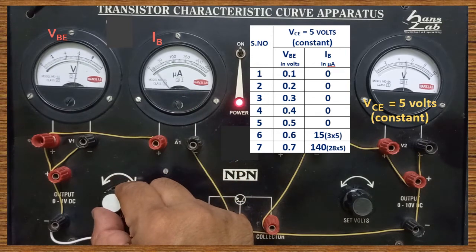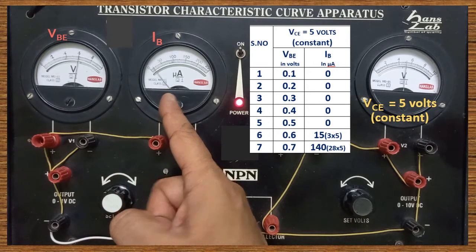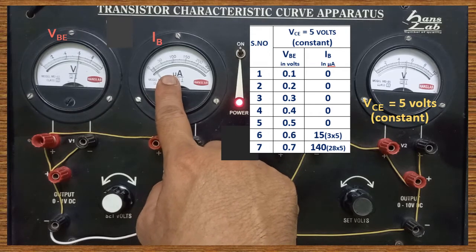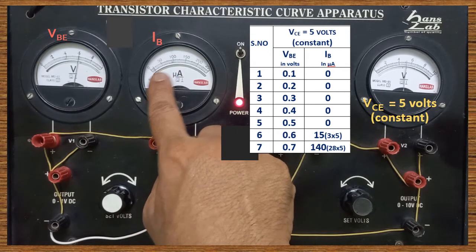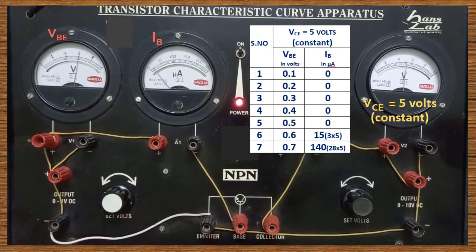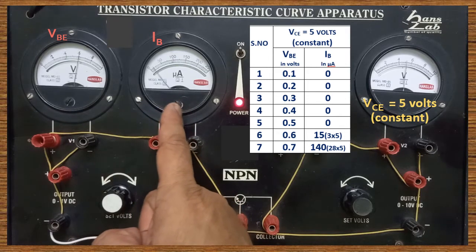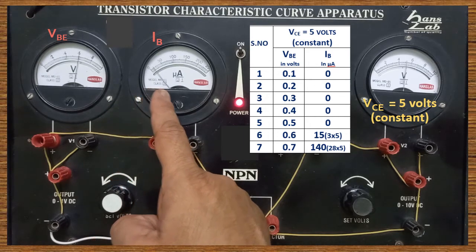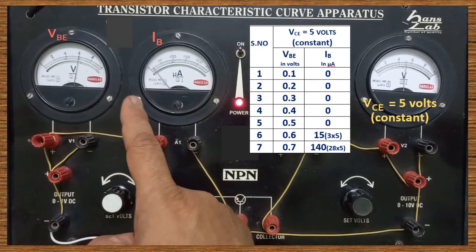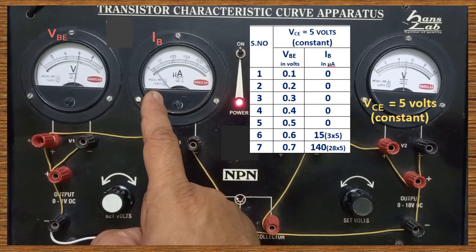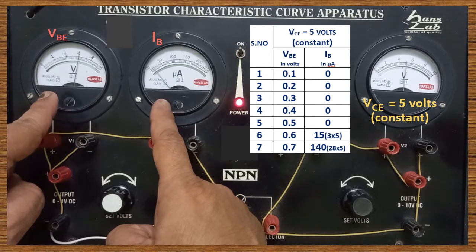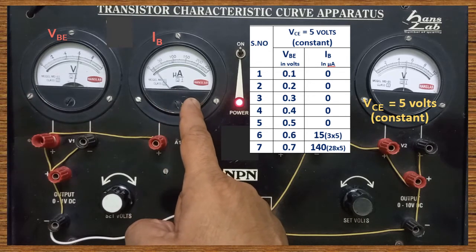Now VBE is increased from 0.5 to 0.6 volt. A small deflection is shown on the microammeter. We need to find which division is coinciding with the pointer. At the 10th division, 50 is marked, so 50 divided by 10 equals 5 — the least count of the microammeter is 5 microampere. The pointer coincides at the 3rd division. 3 into 5 equals 15 microampere. So for VBE = 0.6 volt, IB = 15 microampere.